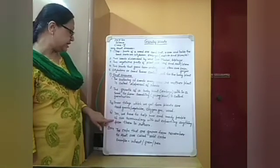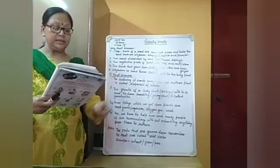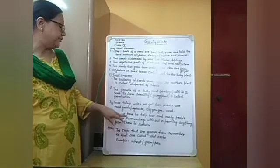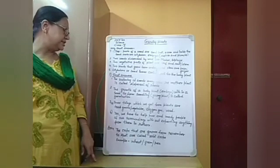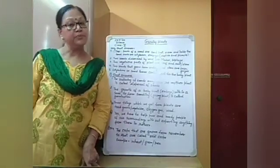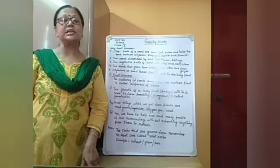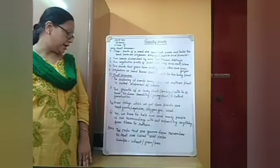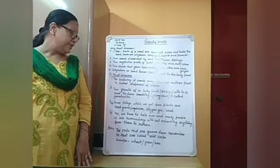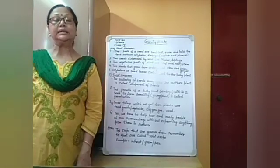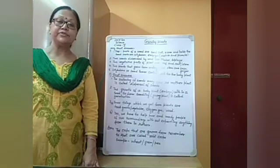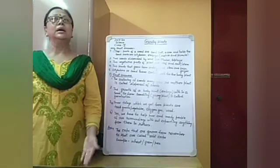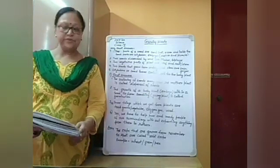The B part: should we help others without expecting anything? Yes, we have to help poor and needy people without expecting anything — it is a social responsibility. The last question: rabi crops are grown from November to April. Products of rabi crops are gram, wheat, and peas. These all grow as rabi crops.